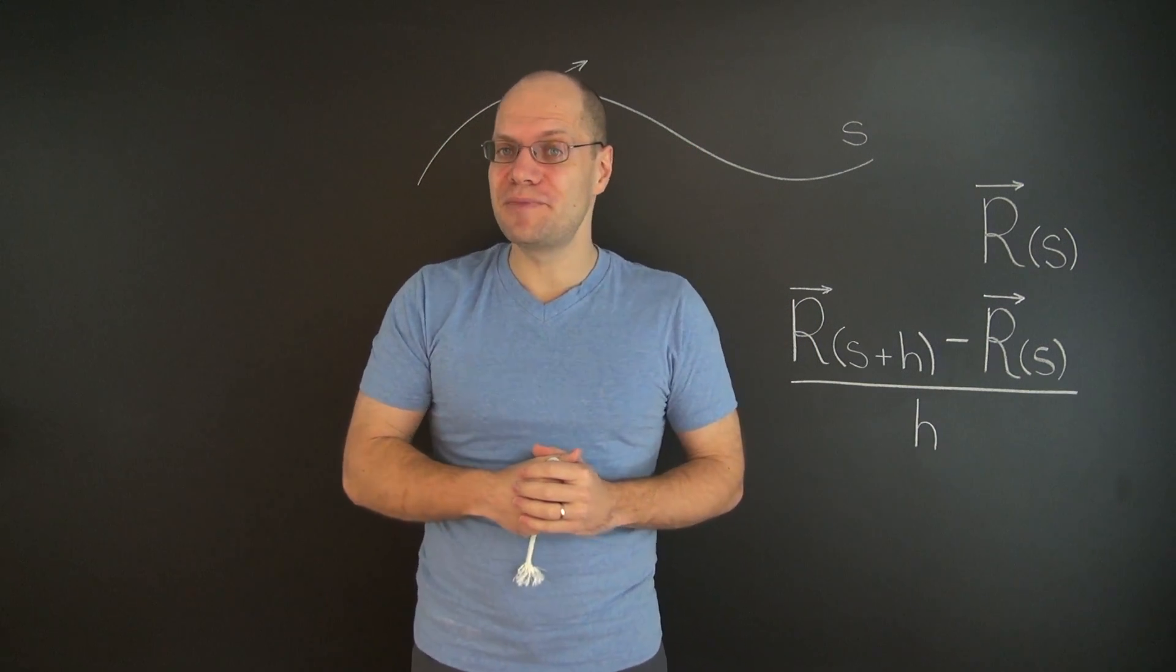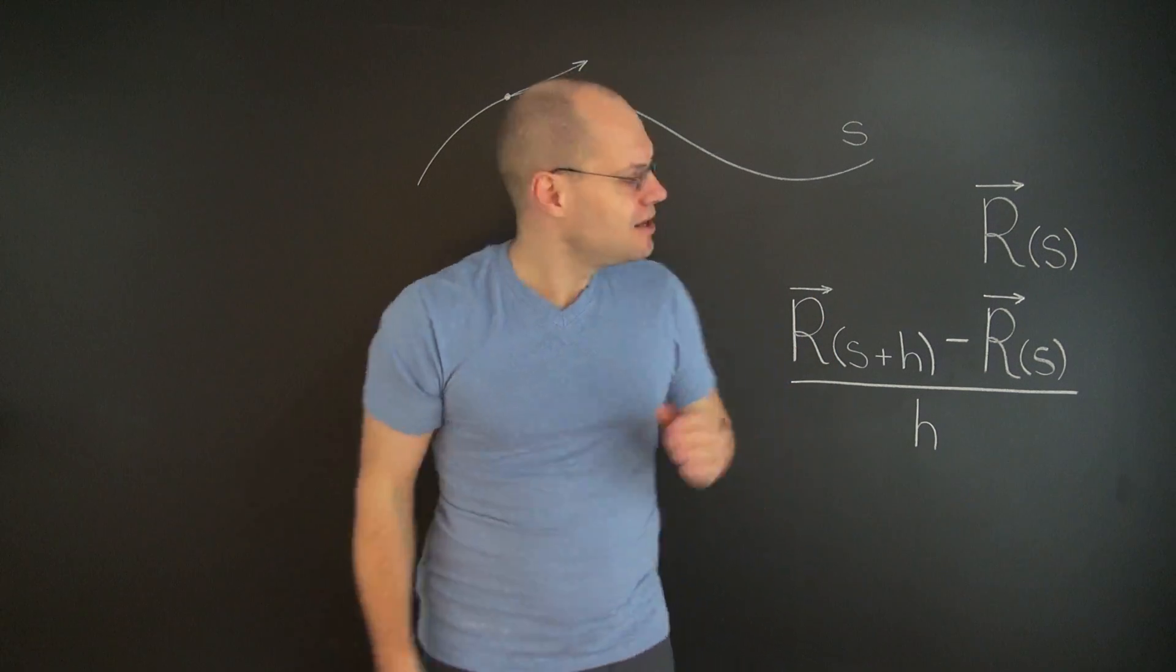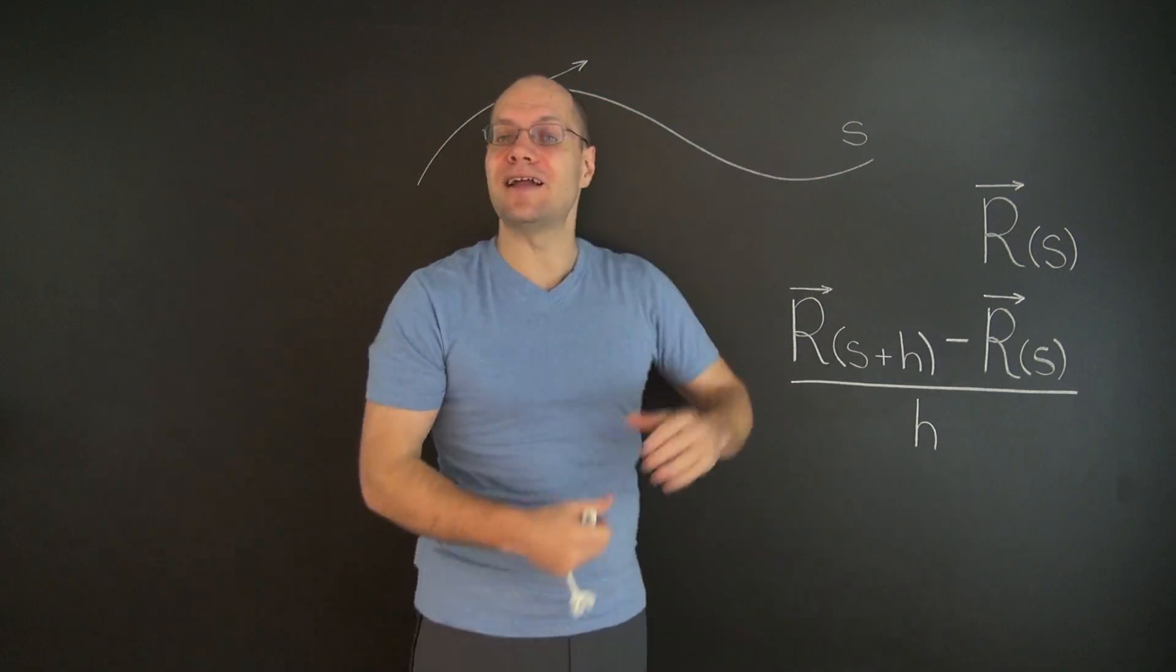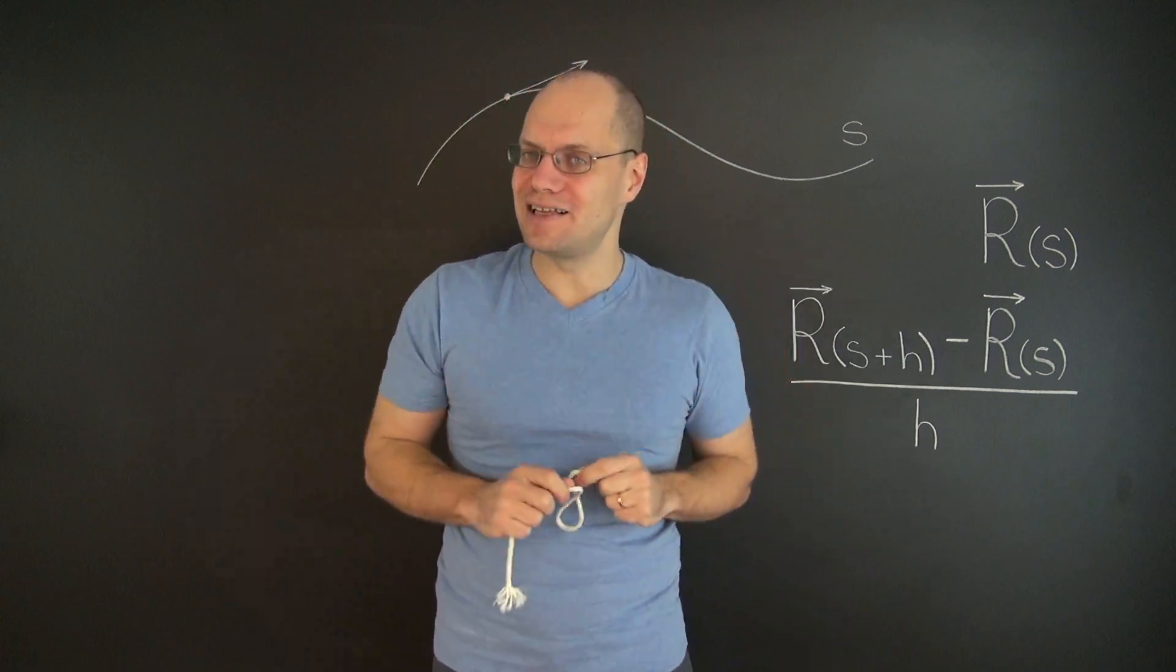First, let me give you a visual reminder for what we mean by arc length. Because it is a non-trivial concept, especially for a curve that's not straight. But I think that the string analogy makes it intuitively clear.